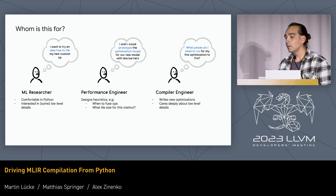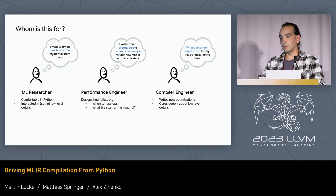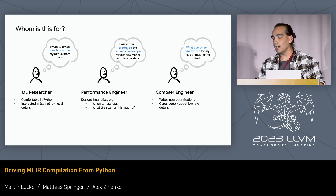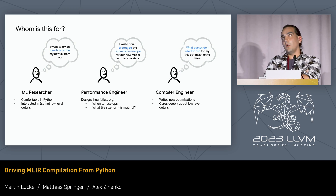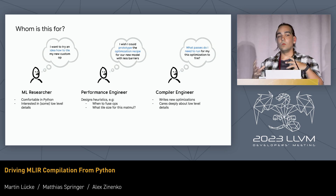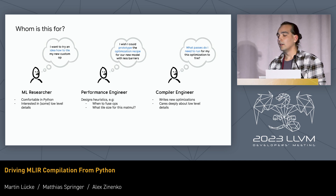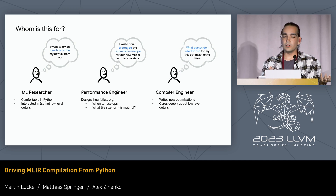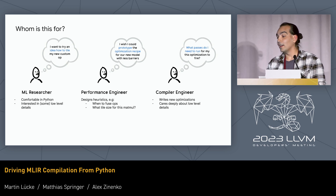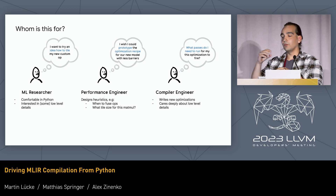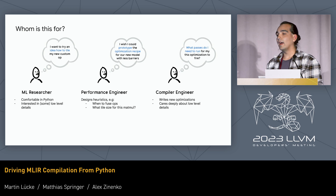Let's first set the scene a little bit — who is this actually for? You are compiler engineers in some way. Suppose you're an ML researcher with a new model with a custom op. It performs badly because it's a new op, but you might have an idea on how to tile it to your hardware. Or maybe you're a performance engineer wanting to prototype an optimization recipe for your model. Or maybe you're a compiler engineer trying to figure out which sequence of passes you need to run to get a specific transform to fire.